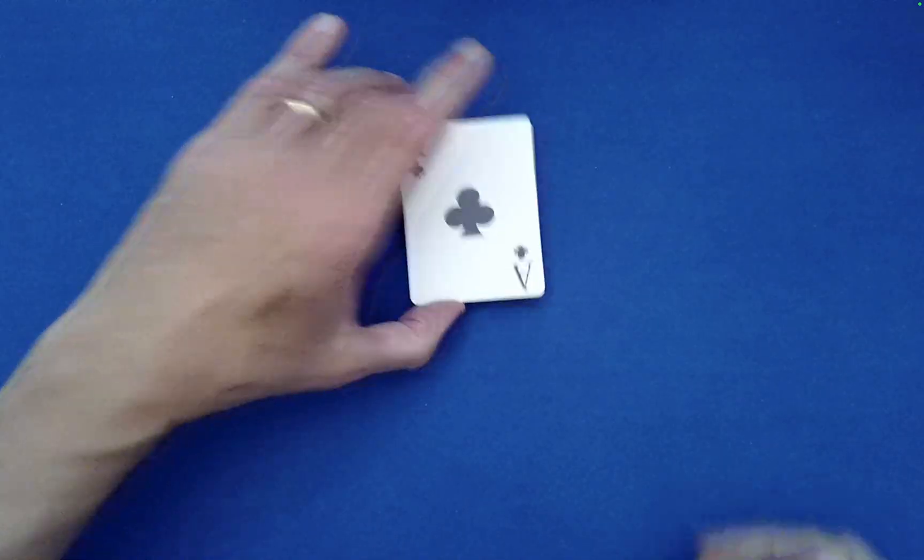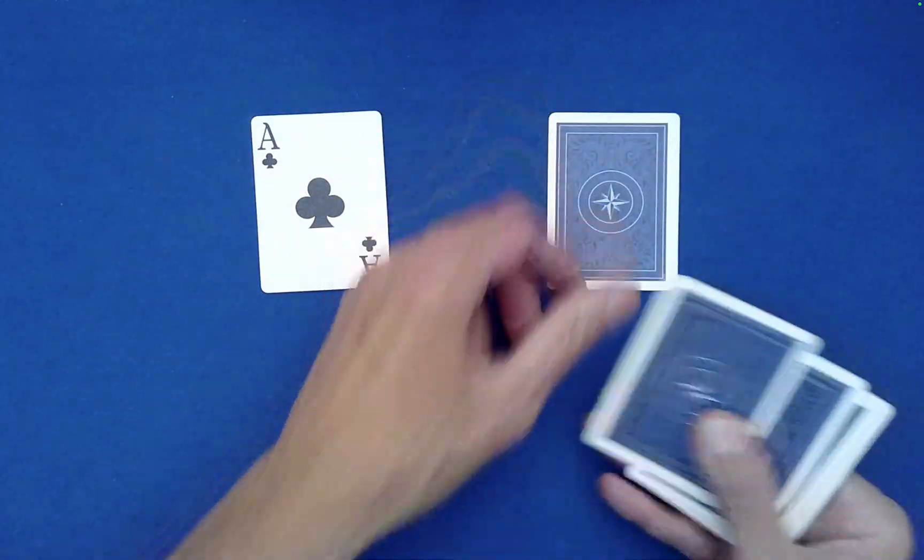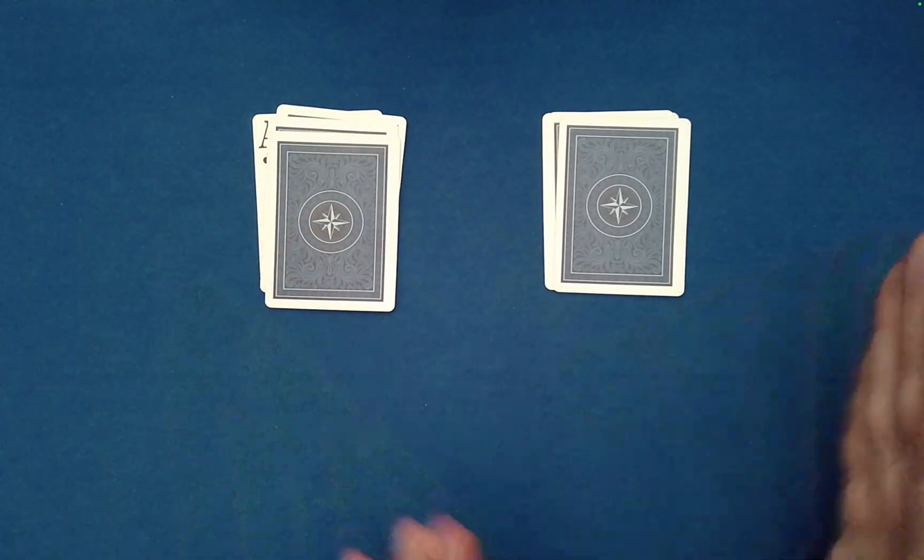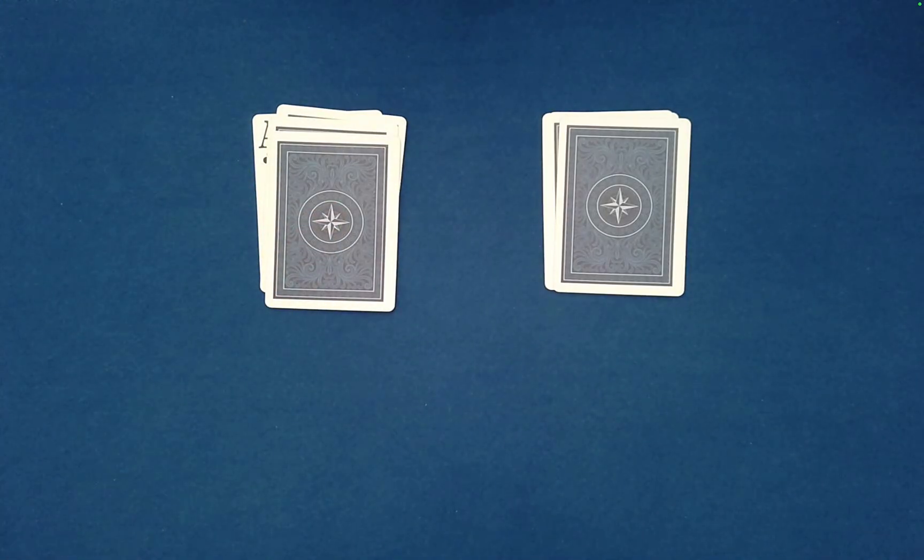Now there's a reason for that, because I want to let you in on a little secret here. When you go to mix cards using this left-right dealing, left-right, left-right, you can sometimes cancel out the effect of one dealing by stacking in the opposite order. In other words, you're not necessarily really mixing the cards.